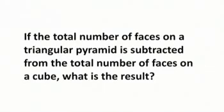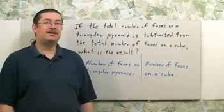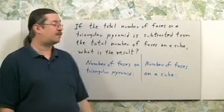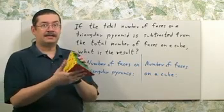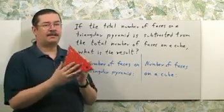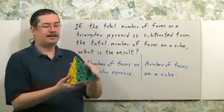If the total number of faces on a triangular pyramid is subtracted from the total number of faces on a cube, what is the result? To get the result, it's a good idea to visualize what they're asking you to find. A triangular pyramid is something like this — it has a triangular base and an apex.